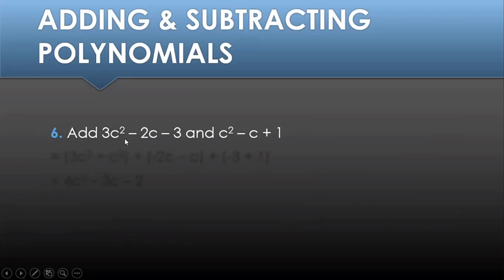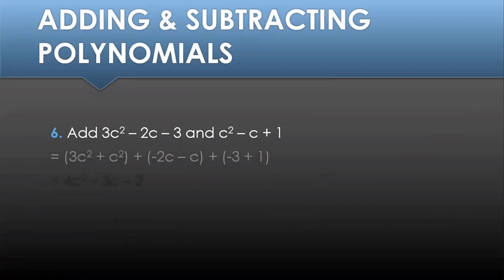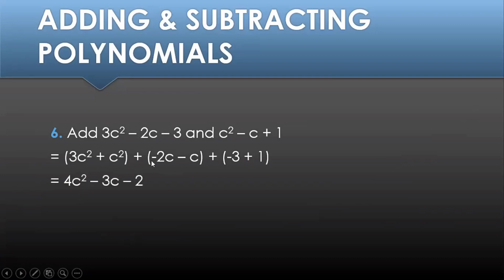Sixth example, we have to add 3c squared minus 2c minus 3 and c squared minus c plus 1. We group the similar or like terms: 3c squared plus c squared gives 4c squared; negative 2c minus c gives negative 3c; and the constants negative 3 plus 1 gives negative 2. So the final answer is 4c squared minus 3c minus 2.